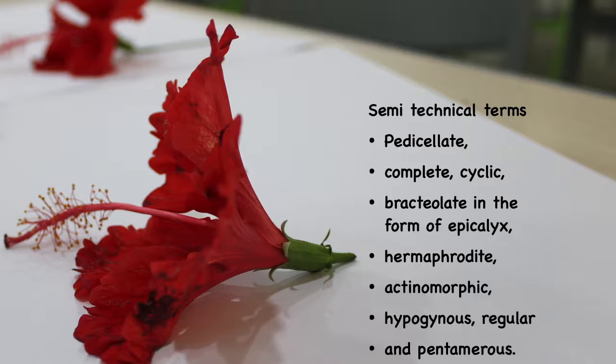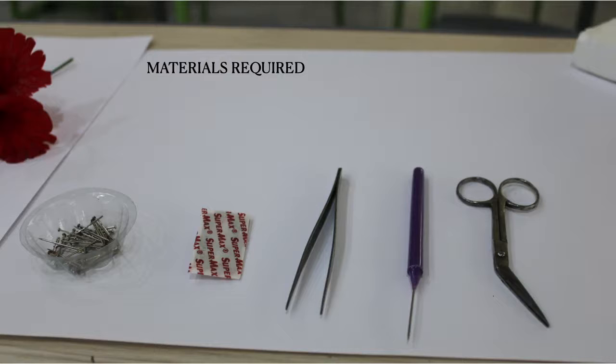Let us now have a look at the materials required for the dissection of the flower. We require pins, a razor blade, a pointed forcep, a needle, and scissors.